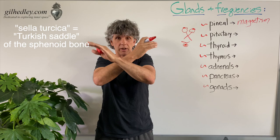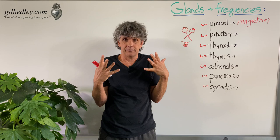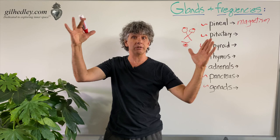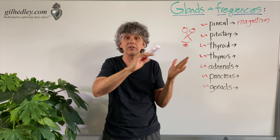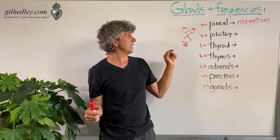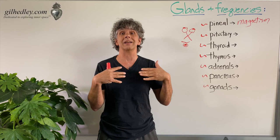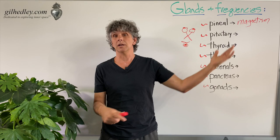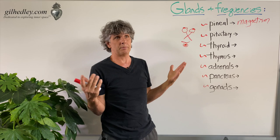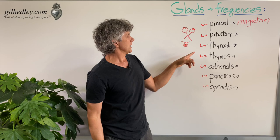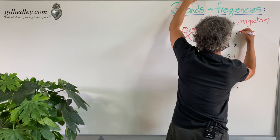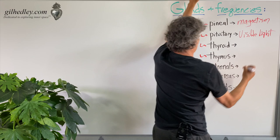I like to say that the pituitary gland is tuned to or by the visible light spectrum, which is a set of frequencies — the colors of the rainbow, that's the visible light spectrum divided up into colors. The pituitary gland is in relationship to that, and we know that to be true because the pituitary gland is running all kinds of cycles in our body in relationship to the movements of the sun relative to the earth — depending on whether you're Galileo or the Inquisition. So: visible light.